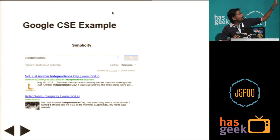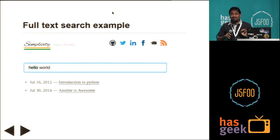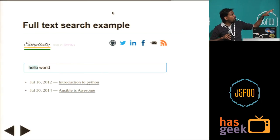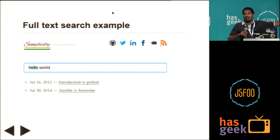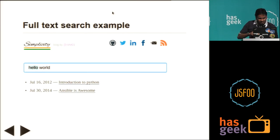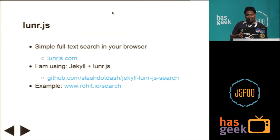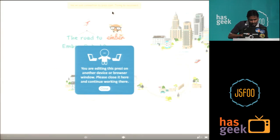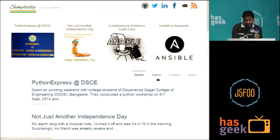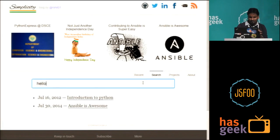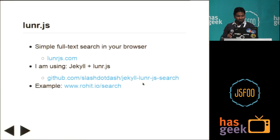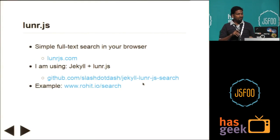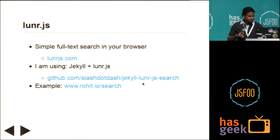So this is a Google Custom Search example. I searched something called 'independence' in my blog and found two blog posts — actually there's one and the other one is my homepage. And this is a full text search example. I searched for the keyword 'hello world', so it listed two blog posts — both of these have a hello world program, so it did the content filtering as well. So lunr.json is what you can use to do the full text search. Let me just show you a very quick example — here's a search, and that's it. For this I'm using Jekyll, so there's a plugin for Jekyll as well. You can look at the sources, and that's it, thank you.